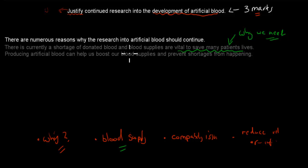By producing artificial blood, it can help us boost our blood supply and prevent shortage from happening. So by having artificial blood, we can make sure we have no shortage, and that helps to save more patients' lives. So this gets one mark out of three so far.